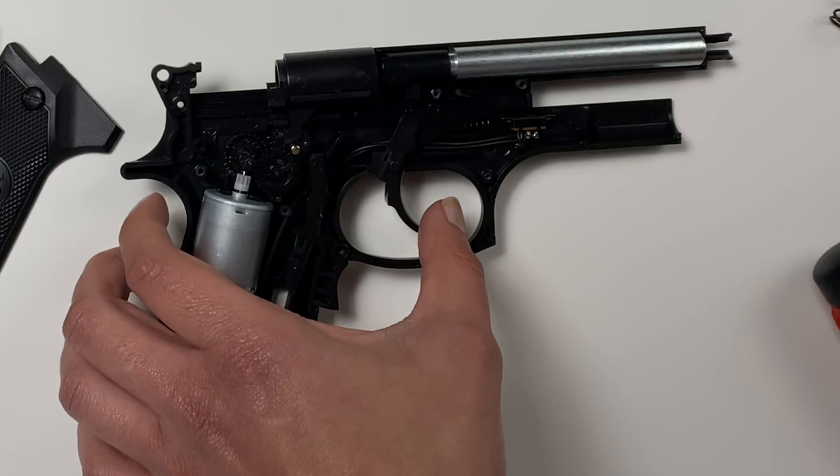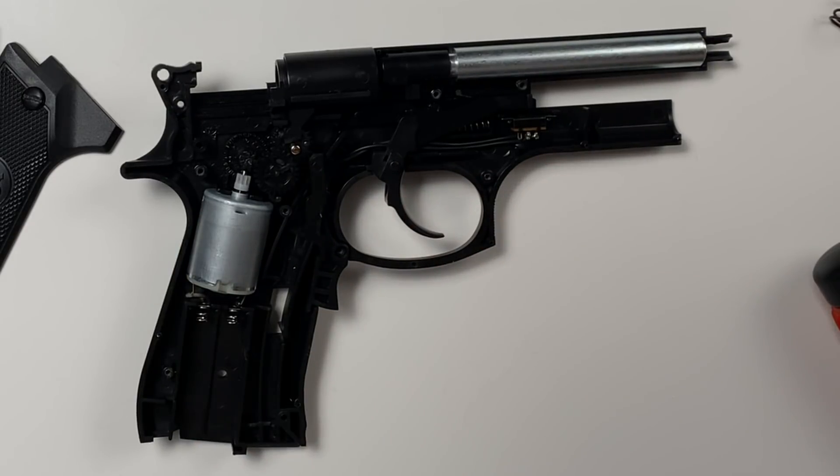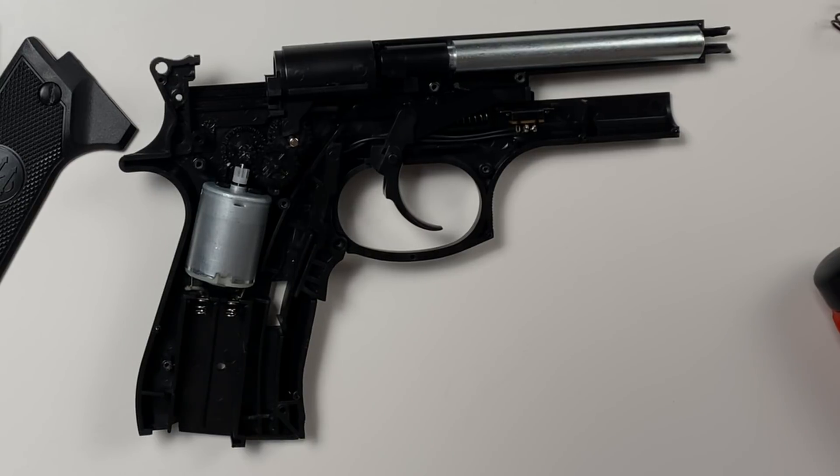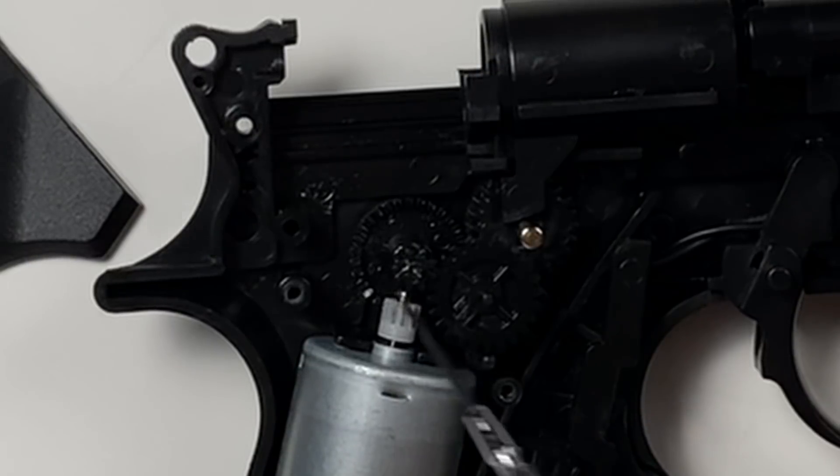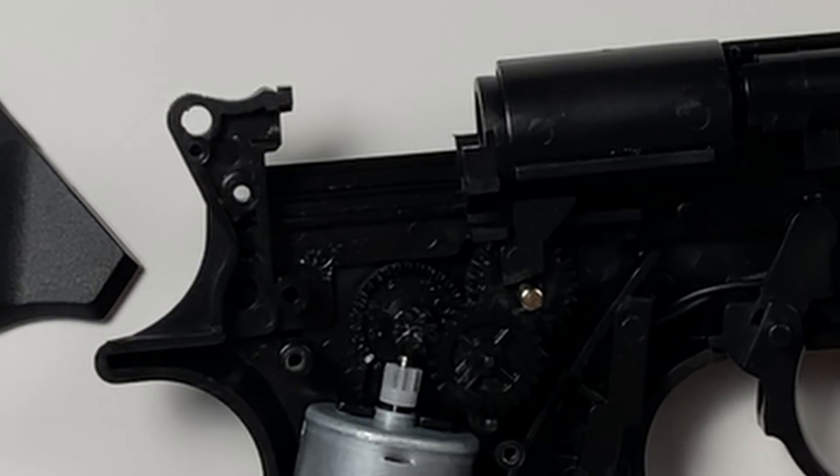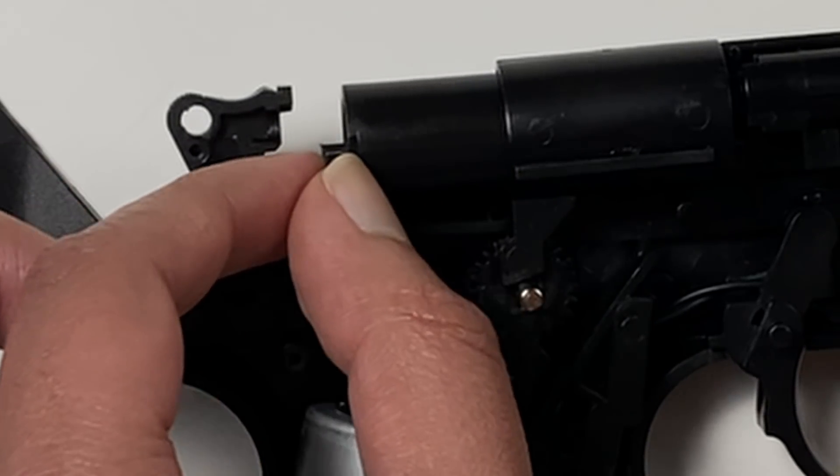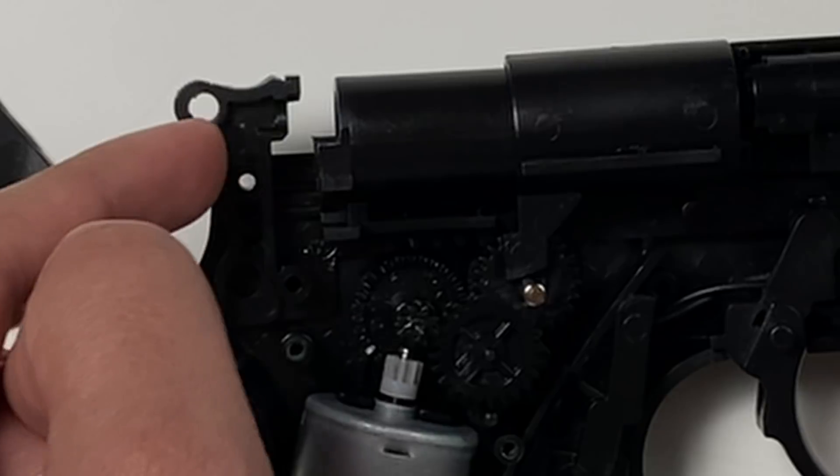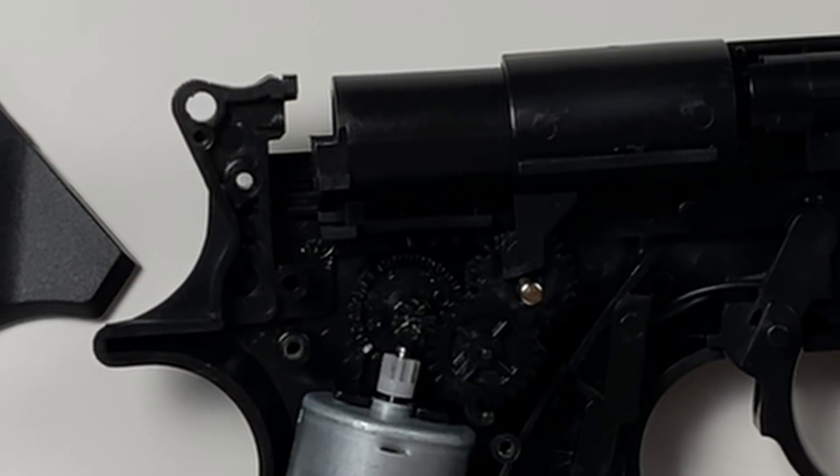You can see if we pull the trigger, it pushes the switch forward. The switch connects the motor to the batteries, and that causes it to turn. The motor turning turns this gear, which turns this gear, which turns this gear. That gear pulls the piston back against the spring, which would be here, and lets it go at a particular point in the firing cycle.